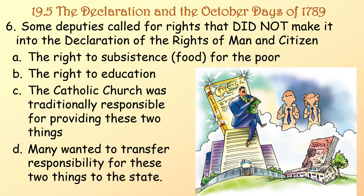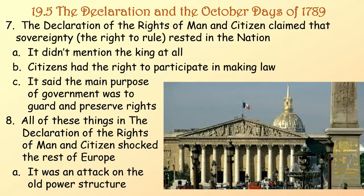Some deputies called for rights that did not make it into the Declaration — for example, the right to subsistence and food for the poor, and the right to education. The Catholic Church had traditionally been responsible for providing these two things, but many wanted to transfer that responsibility to the state. The Declaration claimed that sovereignty — the right to rule — rested in the nation; it didn't mention the king at all. Citizens had the right to participate in making the law, and the main purpose of government was to guard and preserve rights. All of this shocked the rest of Europe — it was an attack on the old power structure.